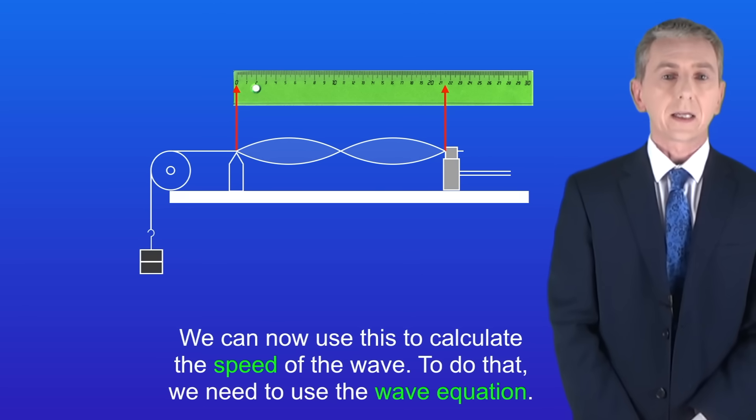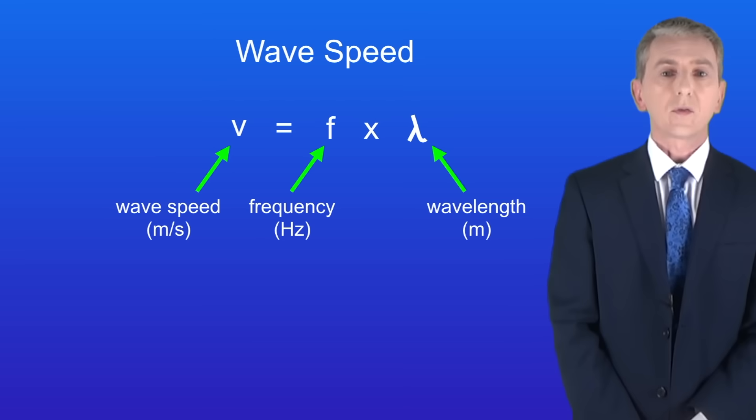We can now use this to calculate the speed of the wave. To do that we need to use the wave equation which we saw in a previous video. The wave speed equals the frequency multiplied by the wavelength.